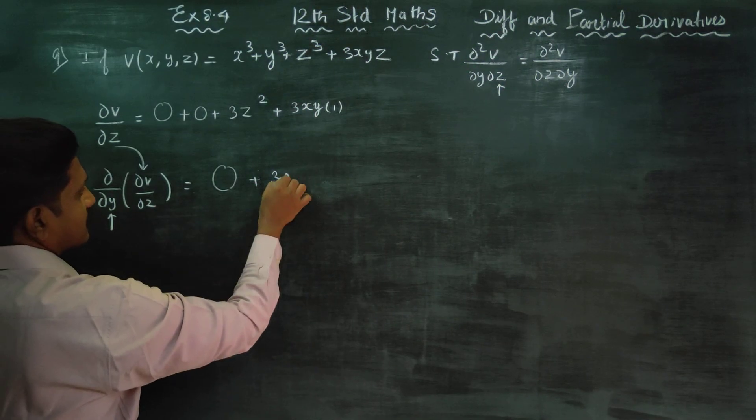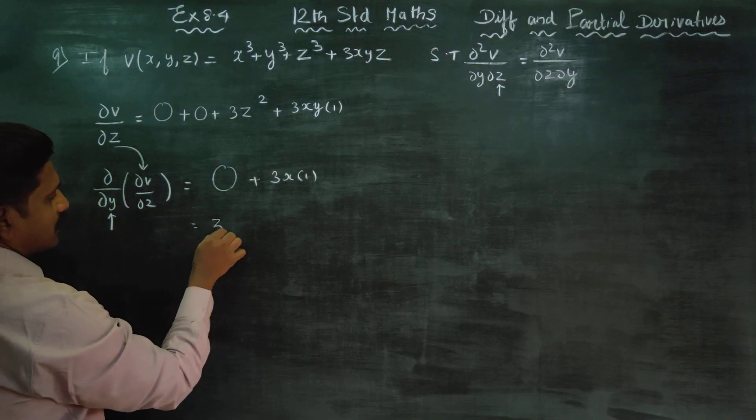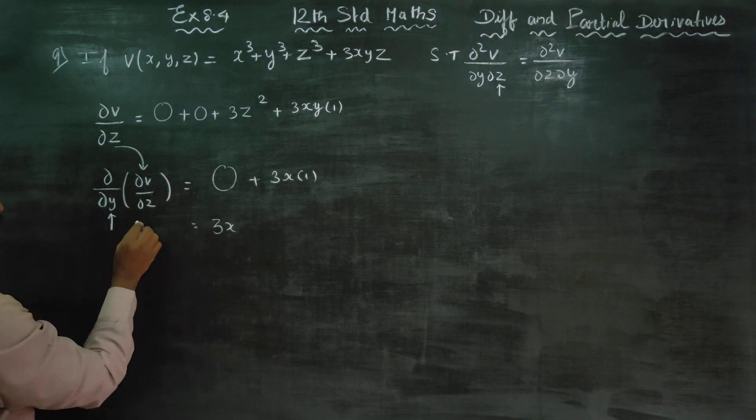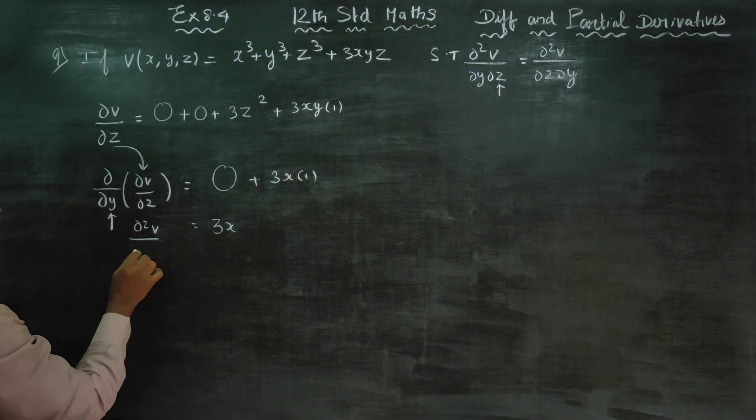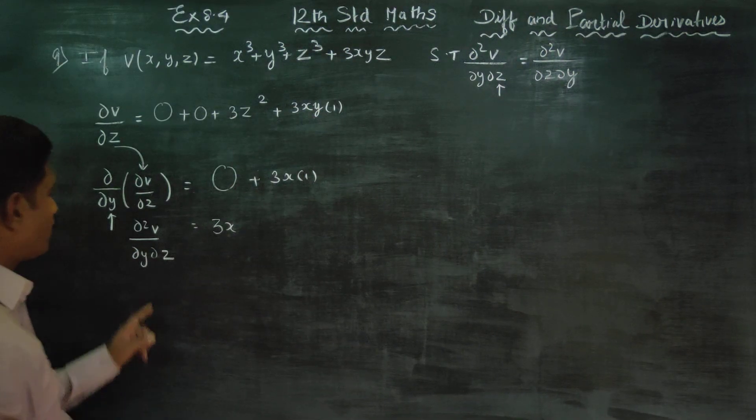3 is a constant, x is a constant. y differentiate, answer is 1. Therefore my answer will be 3x. This is d²v/dy dz. d²v/dy dz. This is my result number 1.